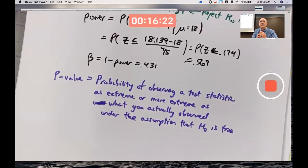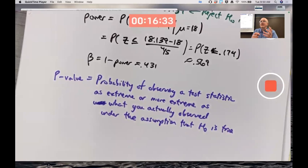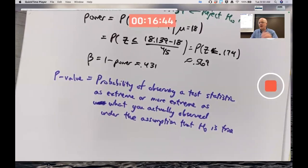Alpha is the probability of a type 1 error — the probability of incorrectly rejecting the null if you assume the null is true. It's when the p-value is less than alpha. When you get a p-value and it happens to be less than alpha, you say okay, I'm going to reject the null, and therefore my probability of a type 1 error is alpha. Let's go ahead and compute it for an example.